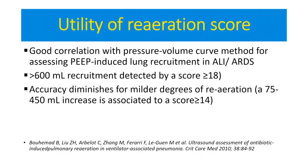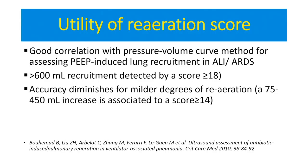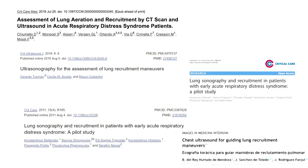The re-aeration score can be used as a tool for recruitment. It has a good correlation with CT-based or pressure-volume curve methods for assessing PEEP-induced lung recruitment. If a score improves to more than or equal to 18, we presume that more than 600 ml of lung volume has been recruited. If the score is around 14 to 18, the meaning becomes a bit more uncertain.